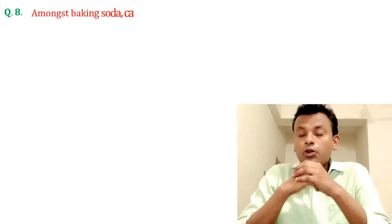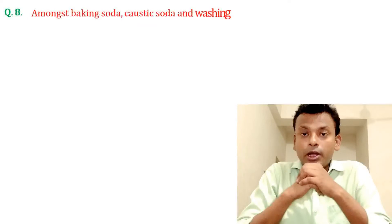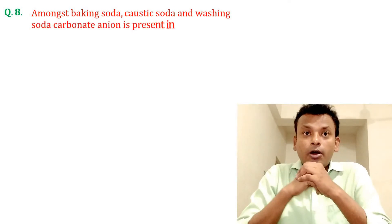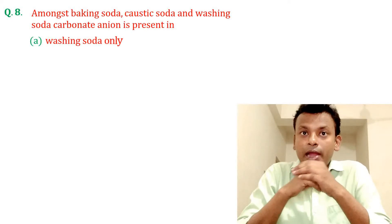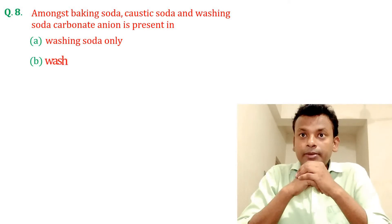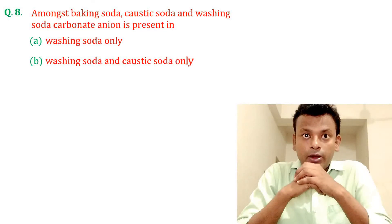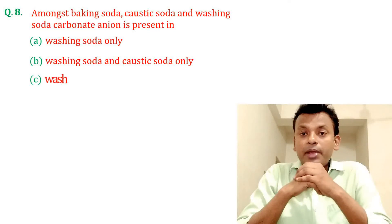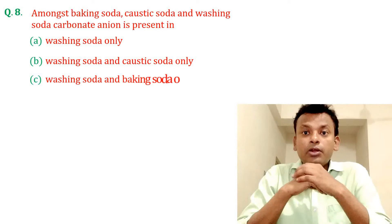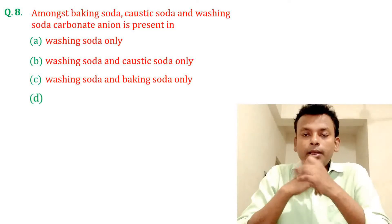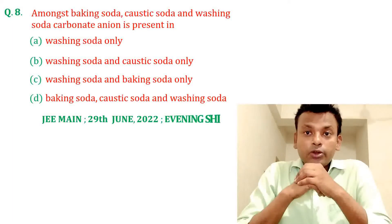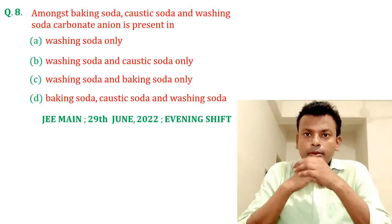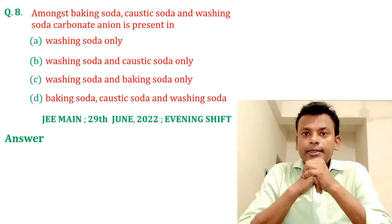Question number 8: Amongst baking soda, caustic soda, and washing soda, the carbonate ion is present in: Option A — Washing soda only. Option B — Washing soda and caustic soda only. Option C — Washing soda and baking soda only. Option D — Baking soda, caustic soda, and washing soda. This question was set in JEMN 29th June 2022 Evening Shift. Answer: Option A is the correct answer.